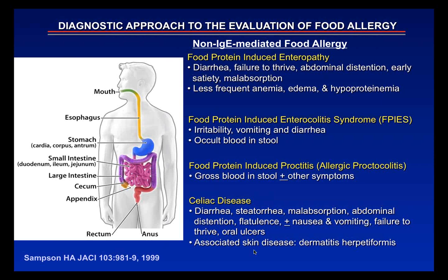Food Protein Induced Proctocolitis (allergic proctocolitis) is commonly seen in pediatrics, interestingly including breastfed infants. Small amounts of cow's milk protein or soy that pass into breast milk can travel to the colon and cause gross blood in the stool. Removing the food from the diet leads to recovery within 72 hours, and these children often outgrow it within the first couple of years of life. FPIES is usually outgrown between the third and fifth year of life. Celiac disease, involving chronic diarrhea, malabsorption, and abdominal pain from gluten exposure, is another example.